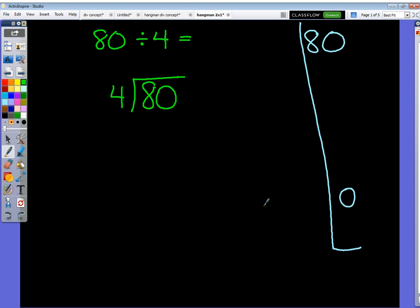Hello, Mr. G here, and I'm going to show you two simple examples of hangman division with no remainder. So my first example here is 80 divided by 4. And what I need to remember is that when I'm doing 80 divided by 4, I'm trying to figure out how many 4's fit in 80.